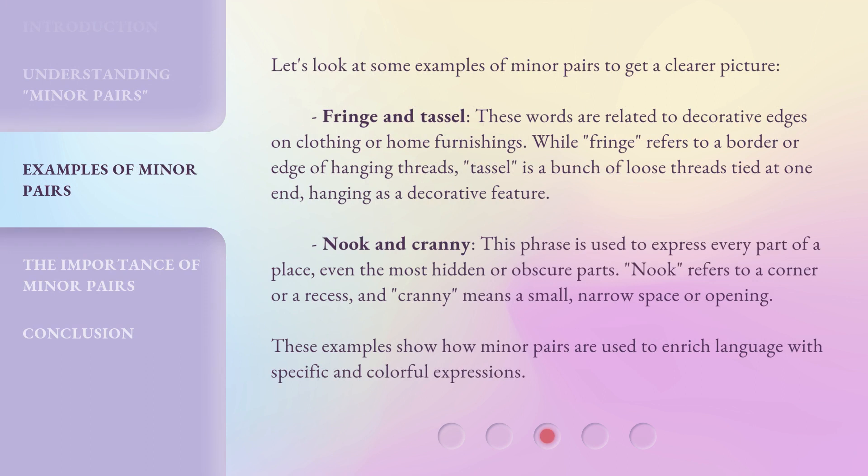Let's look at some examples of minor pairs to get a clearer picture. Fringe and tassel — these words are related to decorative edges on clothing or home furnishings. While fringe refers to a border or edge of hanging threads, tassel is a bunch of loose threads tied at one end.